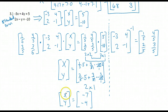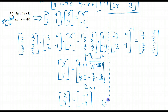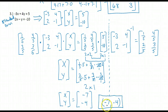So my final answer is x equals negative 7 and y equals negative 4. I can always check this answer by plugging it back into my original equations. Until next time.